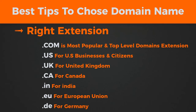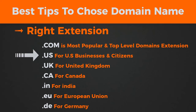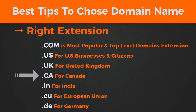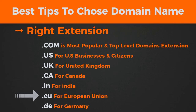There are so many domain extensions available, but the most popular domain extension is .com, and we also recommend you choose .com. But if your website only targets a specific country, then choose the country extension — like .us for US businesses and citizens, .uk for United Kingdom, .ca for Canada, .in for India, .eu for European Union, and .de for Germany.